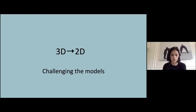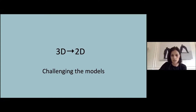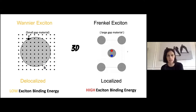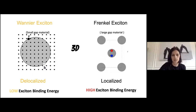It's not just that properties are changing — we also have to change the models we use, because many models were based on 3D systems and by default we started using the same ones, only to find that in two-dimensional materials they no longer hold. One example is the definition of the exciton: textbook Wannier excitons are defined as delocalized with low binding energy, while Frenkel excitons are localized, propagate by switching on and off at different sites, and have high exciton binding energy.